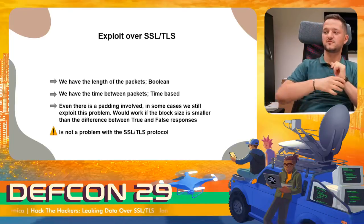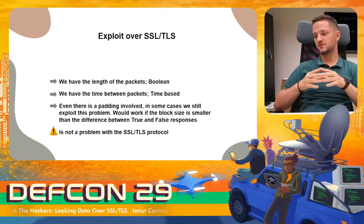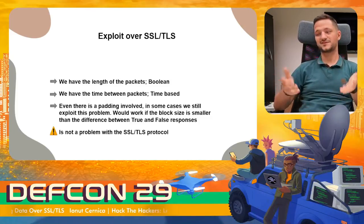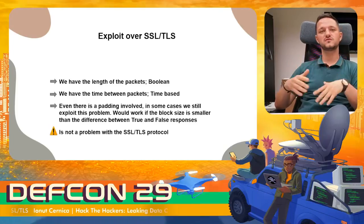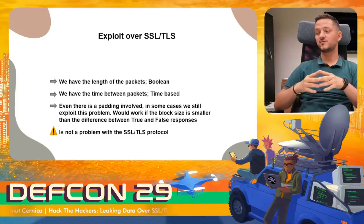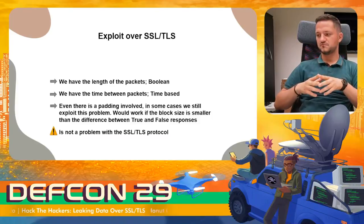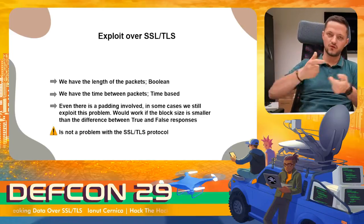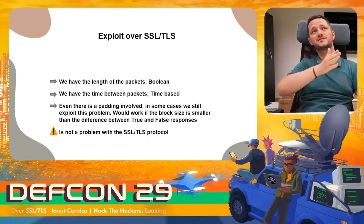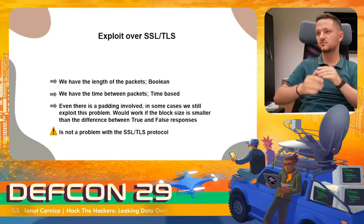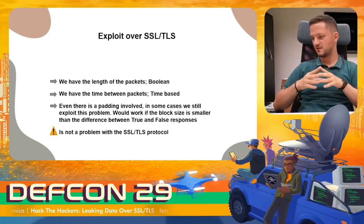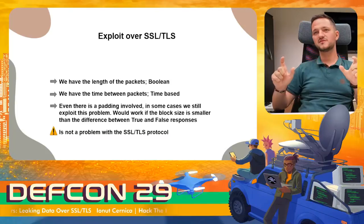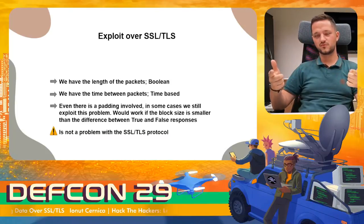How we exploit this over SSL/TLS: we use the length of the packets for Boolean-based, and we use the delays between the packets to find the true responses from the server for time-based. In symmetric ciphers there is padding involved, so we can still exploit this problem because it works if the block size is smaller than the difference between true and false — so true and false will be differentiated by a large length difference. As a disclaimer, this is not a problem with the SSL/TLS protocol; the problem is in the way the exploits are written to exploit this type of attack.